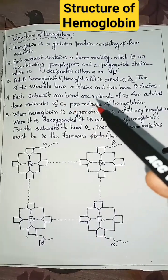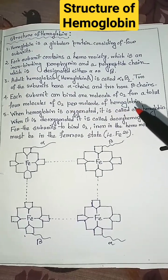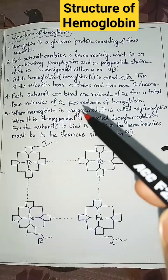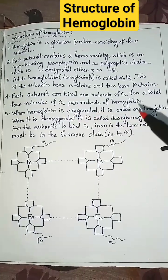Each subunit can bind one molecule of oxygen, for a total of four molecules of oxygen per molecule of hemoglobin.